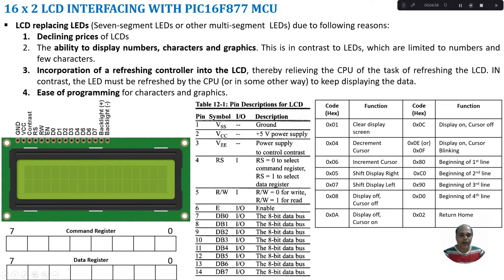Then we have RW bar — read or write operation. For a CPU, the LCD is an output device, so it is always going to write data. It can also do a reading process — reading the busy flag in the LCD, which indicates whether the LCD is ready to accept data. If the busy flag is 1, the LCD is not ready. The CPU will wait until the busy flag goes to zero, then start sending data again.